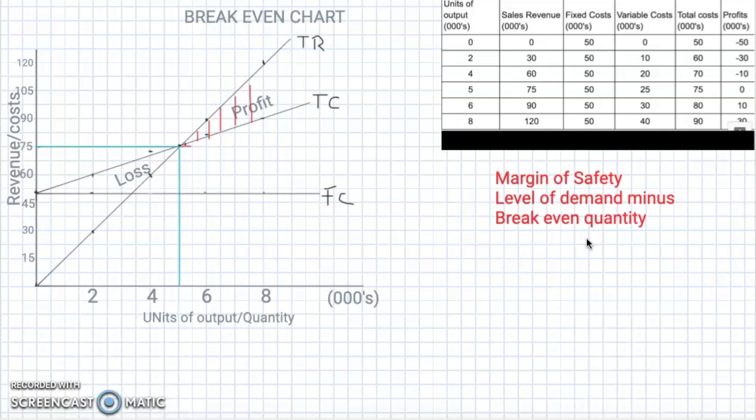With the margin of safety, it is really the amount of sales that are above the break-even point. In other words, the margin of safety tells the amount by which a company's sales could be reduced or decreased before the company will not have any profit or before the company starts making a loss.